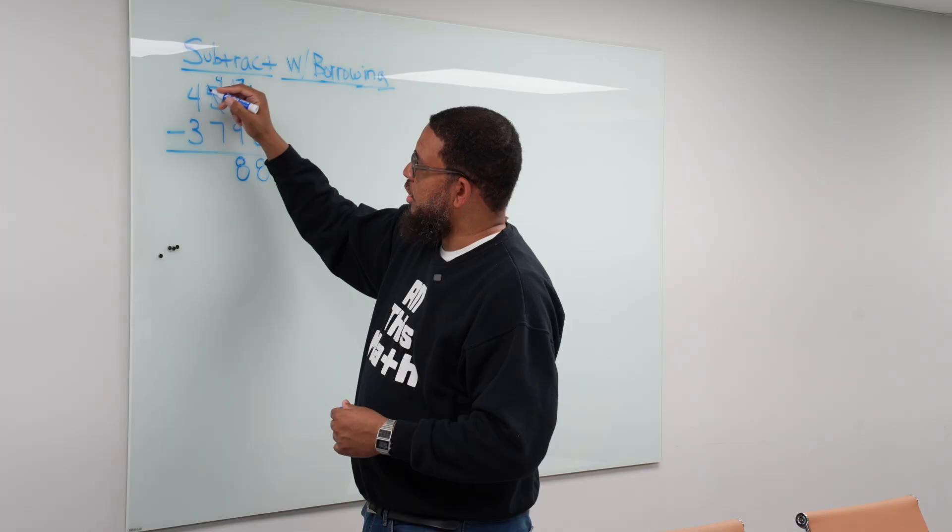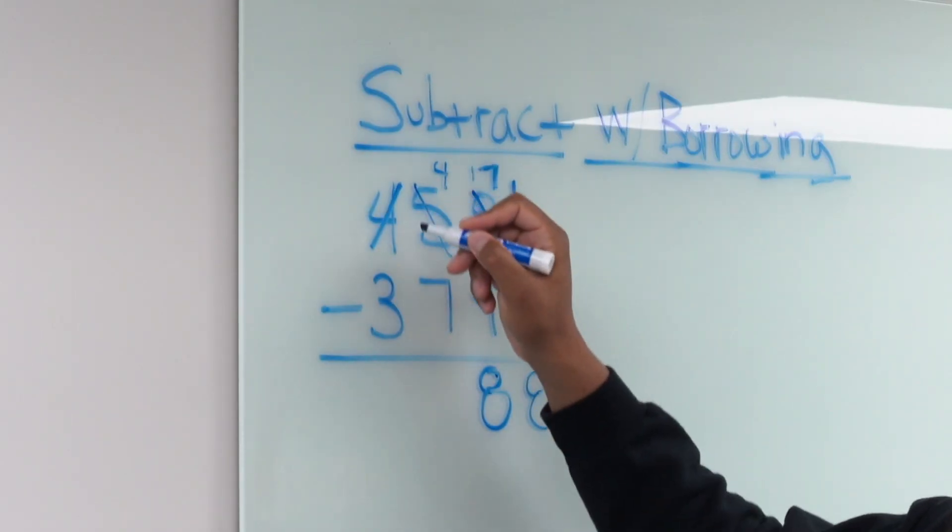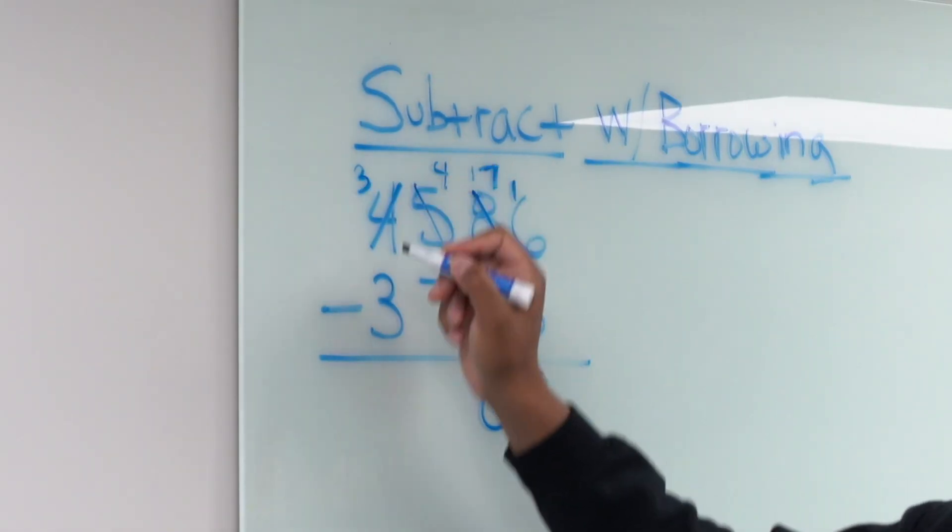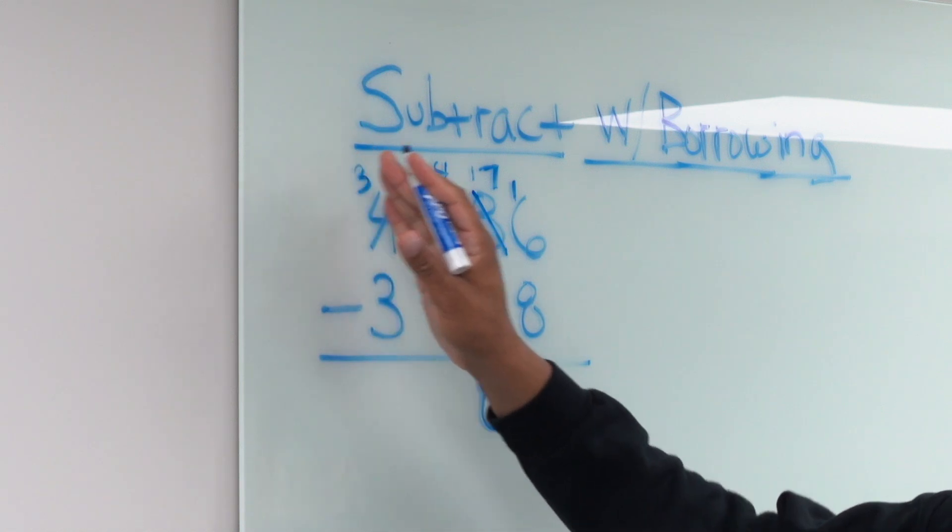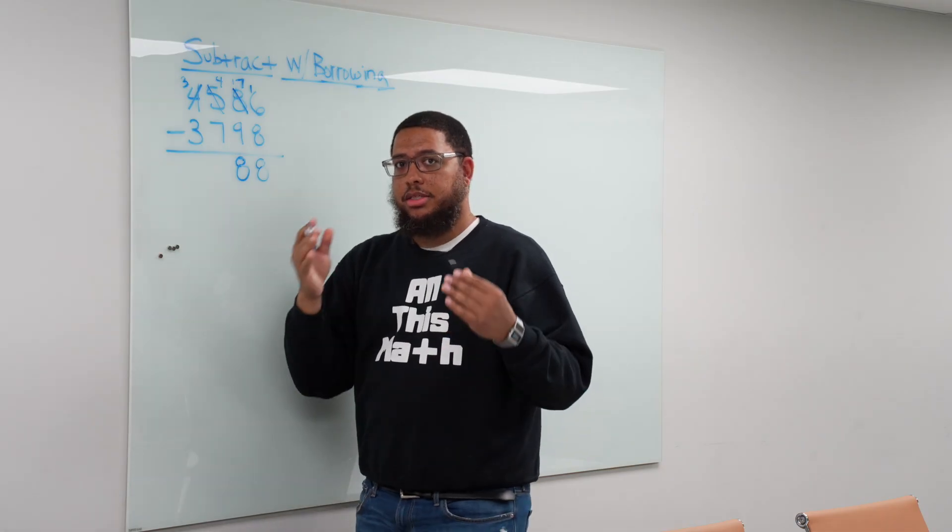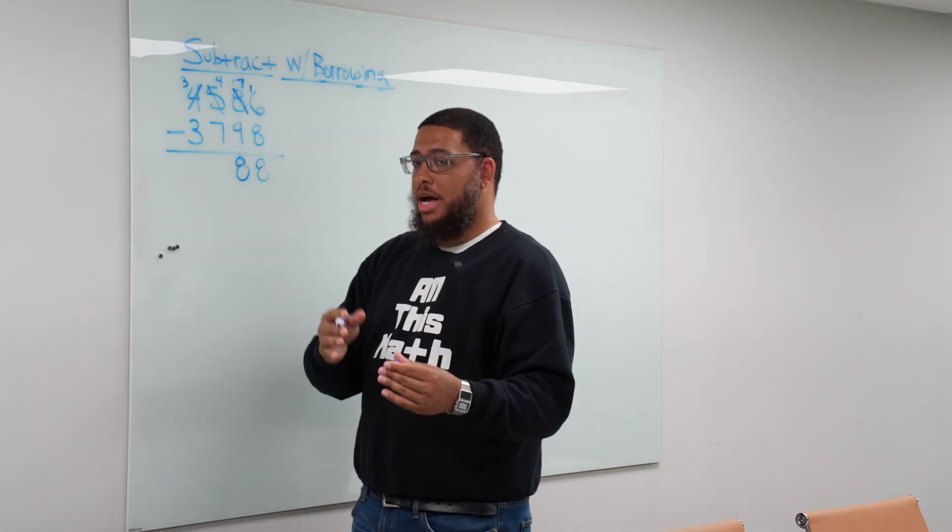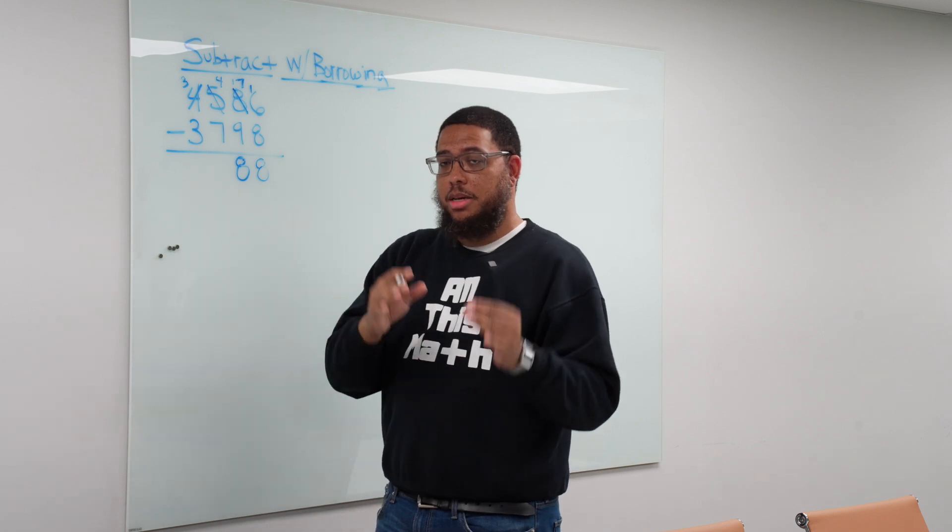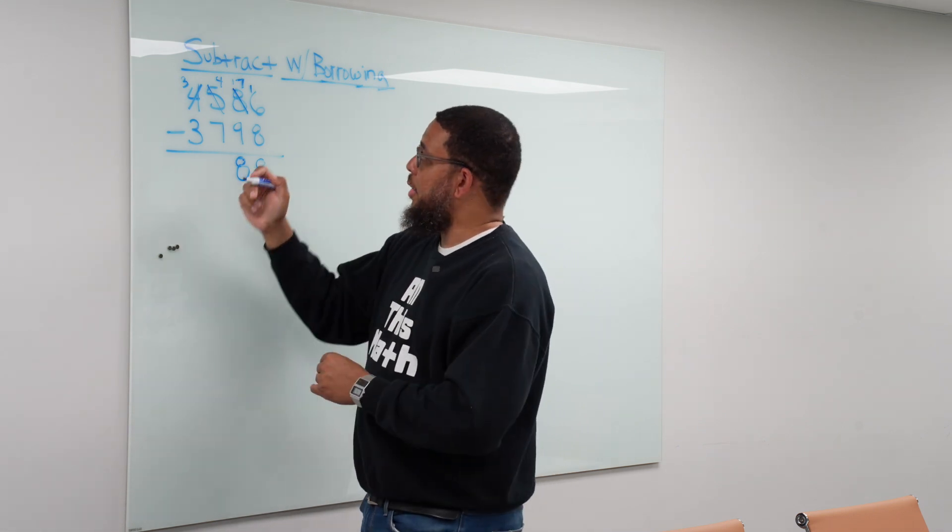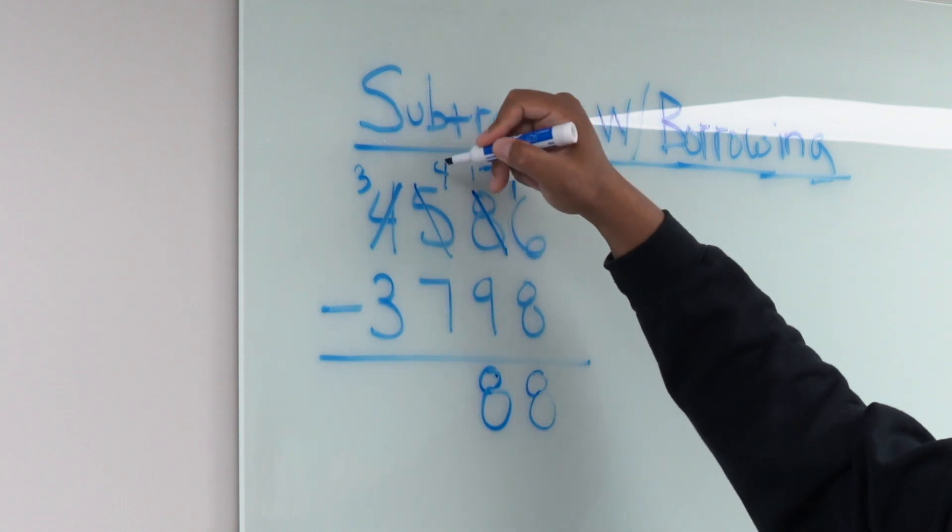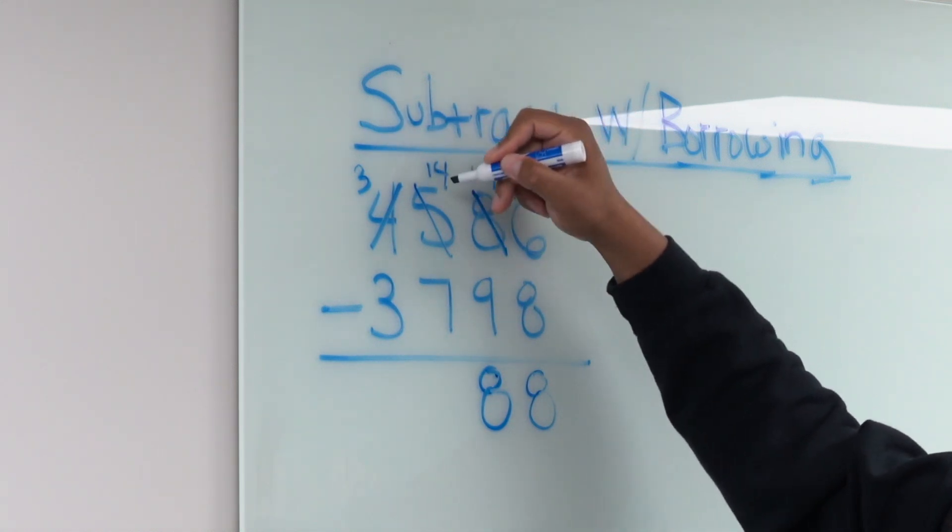So we go to the thousands place and we're going to take 1,000 from these 4,000s leaving us with 3,000s. And then 1,000 is the same thing as 10 hundreds. So 1,000 is the same as 10 hundreds. $1,000 is the same thing as 10 $100 bills.